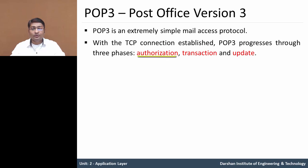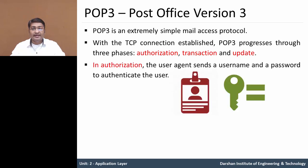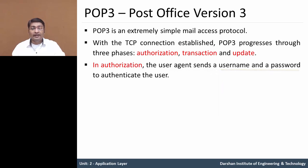The first phase is authorization, the second phase is transaction, and the third is update. During the first phase — authorization — the user agent sends a username and password to authenticate the user during the process of authorization. After authentication, it gives authorization to access the mail at the recipient mail server.